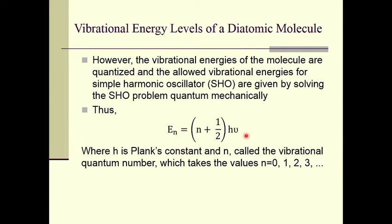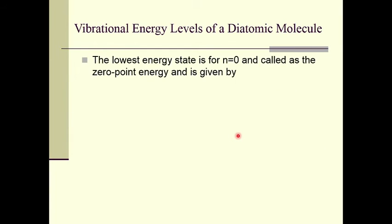Quantum mechanically, the vibrational energies of the molecule are quantized, meaning they take discrete values. By putting different values of n we get different energy values. For n = 0 we get E₀ = (1/2)hν, which is called the zero-point energy. The lowest energy of a harmonic oscillator is not zero — it is (1/2)hν — and therefore we take this energy as the reference and call it zero-point energy.